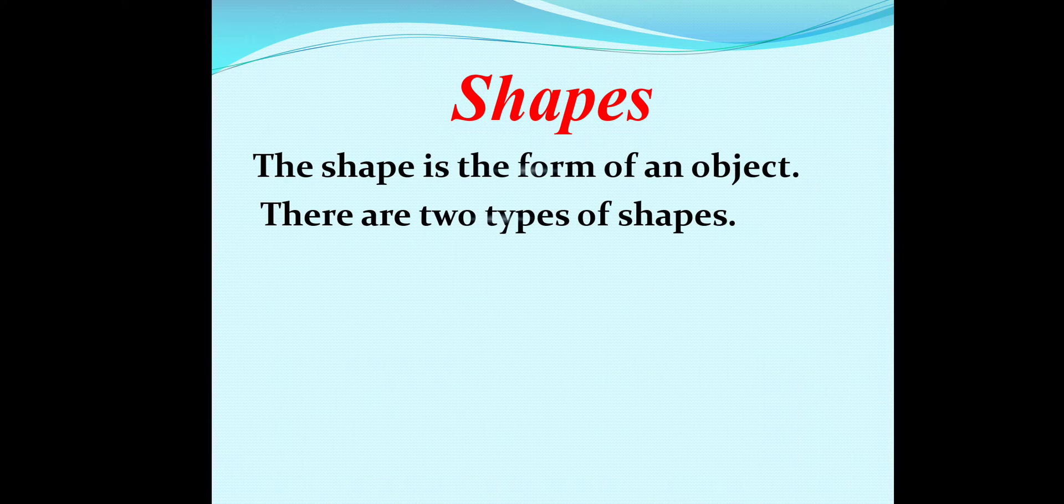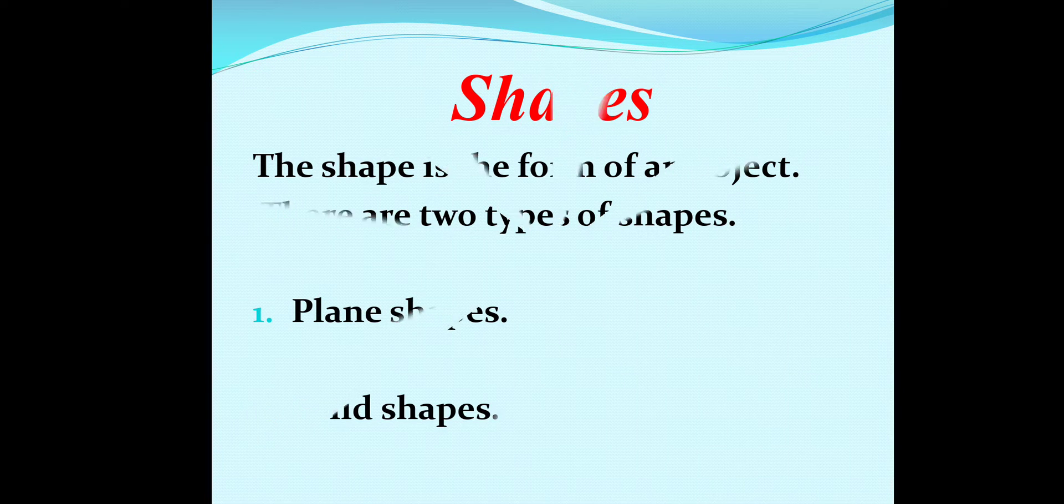The shape is the form of an object. There are two types of shapes: plane shapes and solid shapes. Let's discuss one by one.